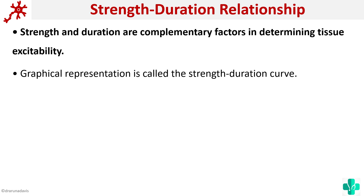Strength and duration are two important factors that determine the excitability of a tissue. This graphical representation is called the strength-duration curve — that is, the strength of the stimulus and the duration of the stimulus. These two factors determine excitability, and a graph drawn between them represents the strength-duration relationship.